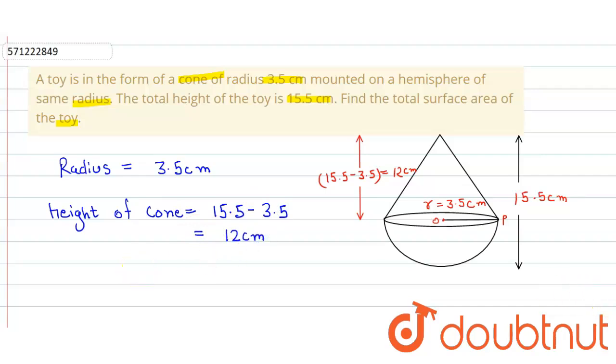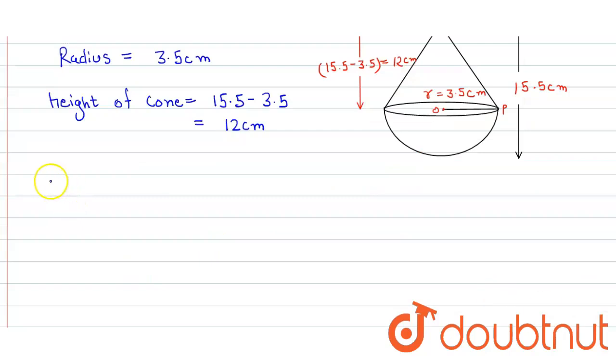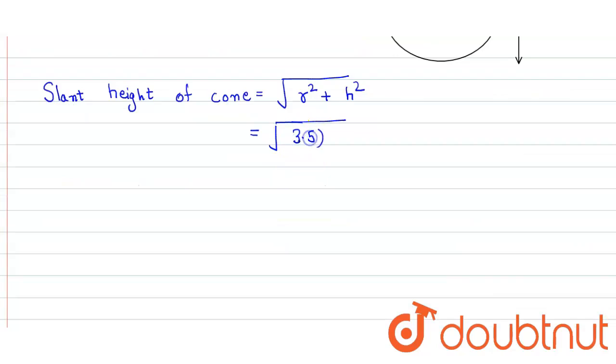Now we find out the slant height of cone. The formula for that is equals to under root radius square plus height square. So here we put the value: radius is 3.5 square plus height is 12 square, so it equals 12 square is 144 and 7 upon 2 whole square.